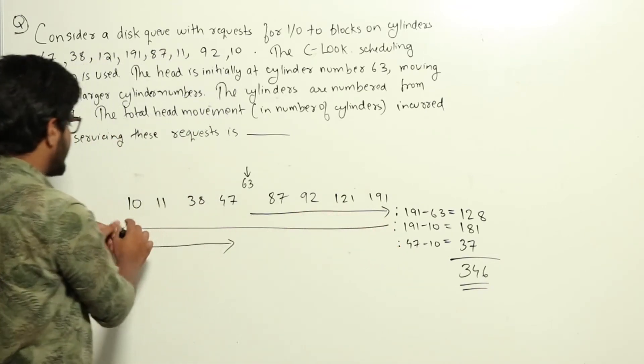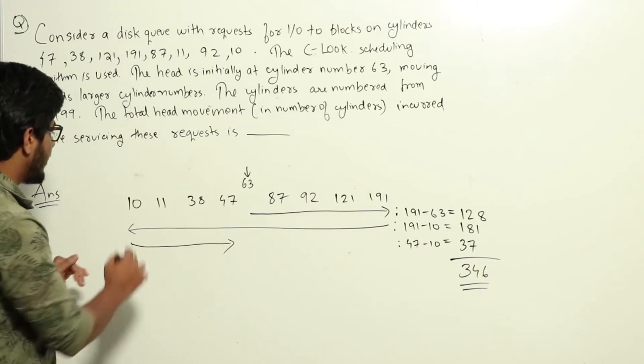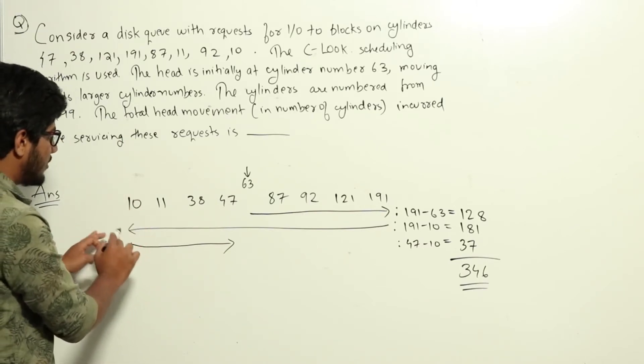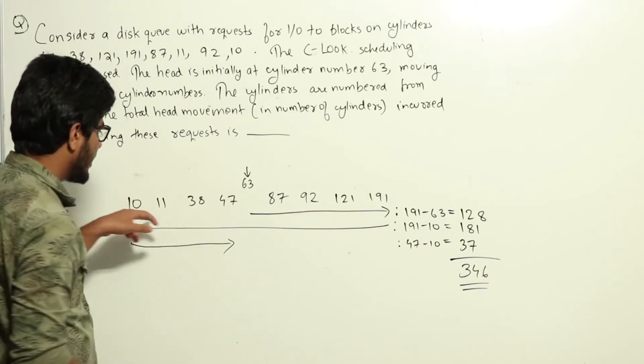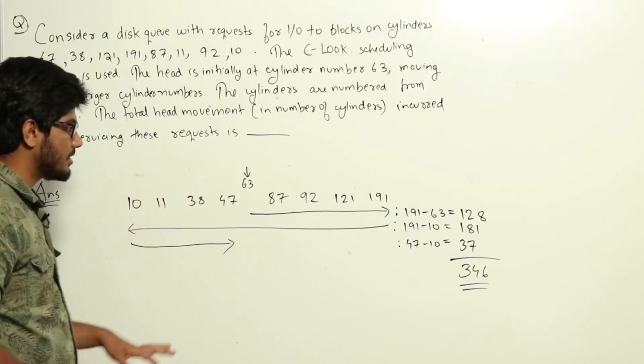That is, it will move to the leftmost part in the cylinder having the smallest request. And from there, it will again keep on moving right and keep on servicing the requests that are left unserviced.